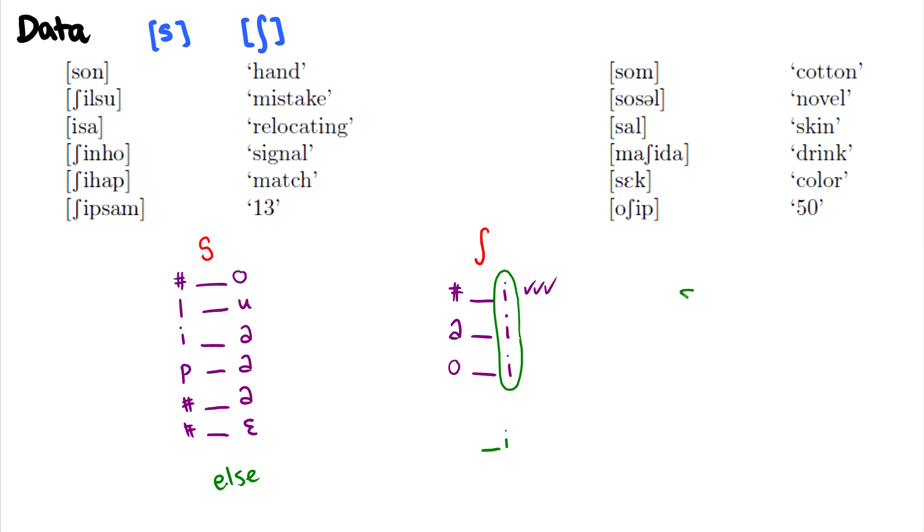Now with s and sh, what's really the difference between these? Well, it's just anterior. It's just the anterior features. S is forward, sh is more backwards. So with that caveat aside,